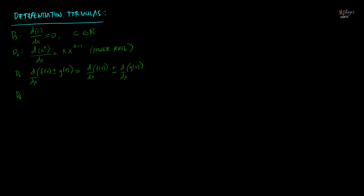Differentiation formula number four — starting from formula four, we will use u and v as functions of any variable rather than writing 'over dx' explicitly. The product rule states: the derivative of u times v equals u times dv plus v times du. This is called the product rule because it is used whenever you differentiate the product of two functions.